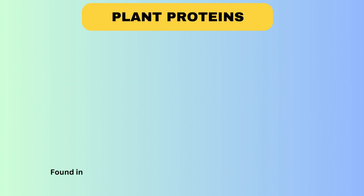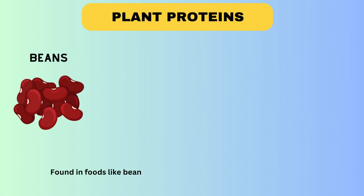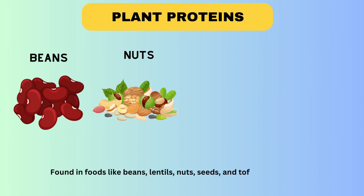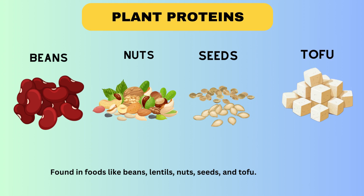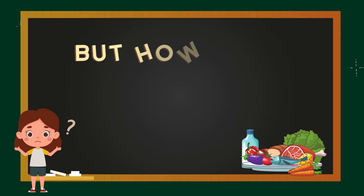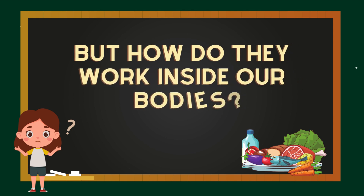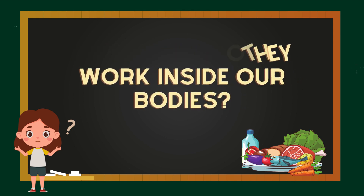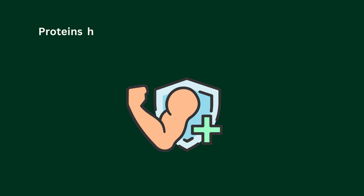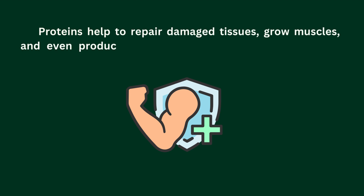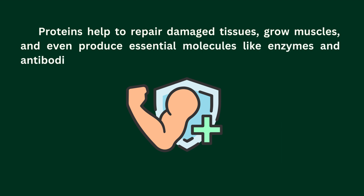Next are plant proteins. These are found in foods like beans, nuts, seeds, and tofu. But how do they work inside our bodies? Proteins help to repair damaged tissues, grow muscles, and even produce essential molecules like enzymes and antibodies.